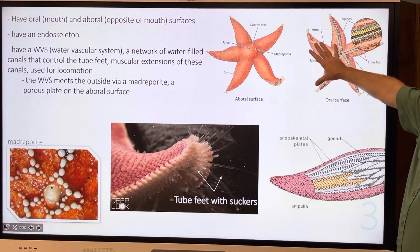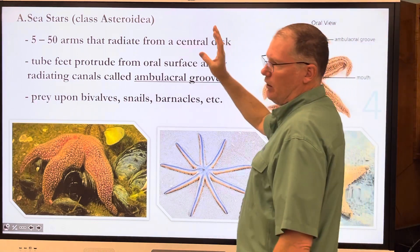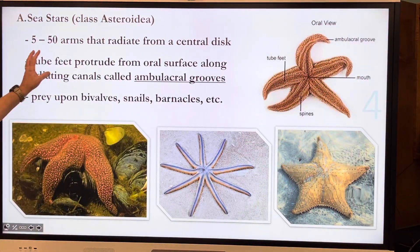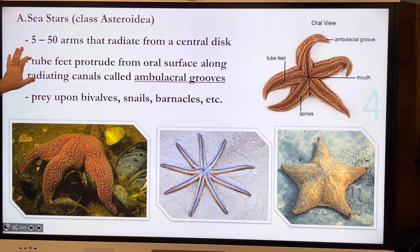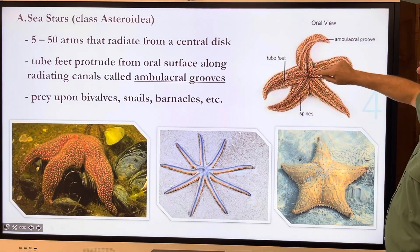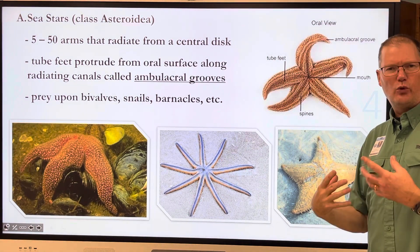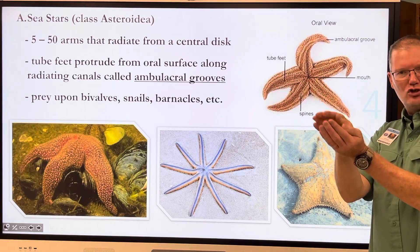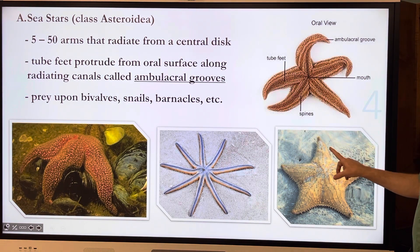You're going to be drawing something like this for your scientific illustration. Sea stars have anywhere from five to fifty arms — some have more than five. They come from a central disc. They have tube feet that protrude from the oral surface radiating along canals called ambulacral grooves. They prey upon bivalves — clams, mollusks, oysters — bi meaning two, valve meaning shell — as well as snails, barnacles, et cetera. We have these here in Florida.